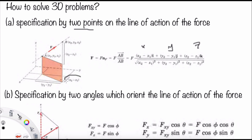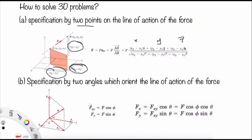The x component of AB is (x2 minus x1), referring to the starting and ending points in x. Similarly for y and z. This is divided by the square root of the sum of squares of AB in x, y, and z directions. The second method is used when we don't have information about the points — we use specification by two angles along the line of action of the force.